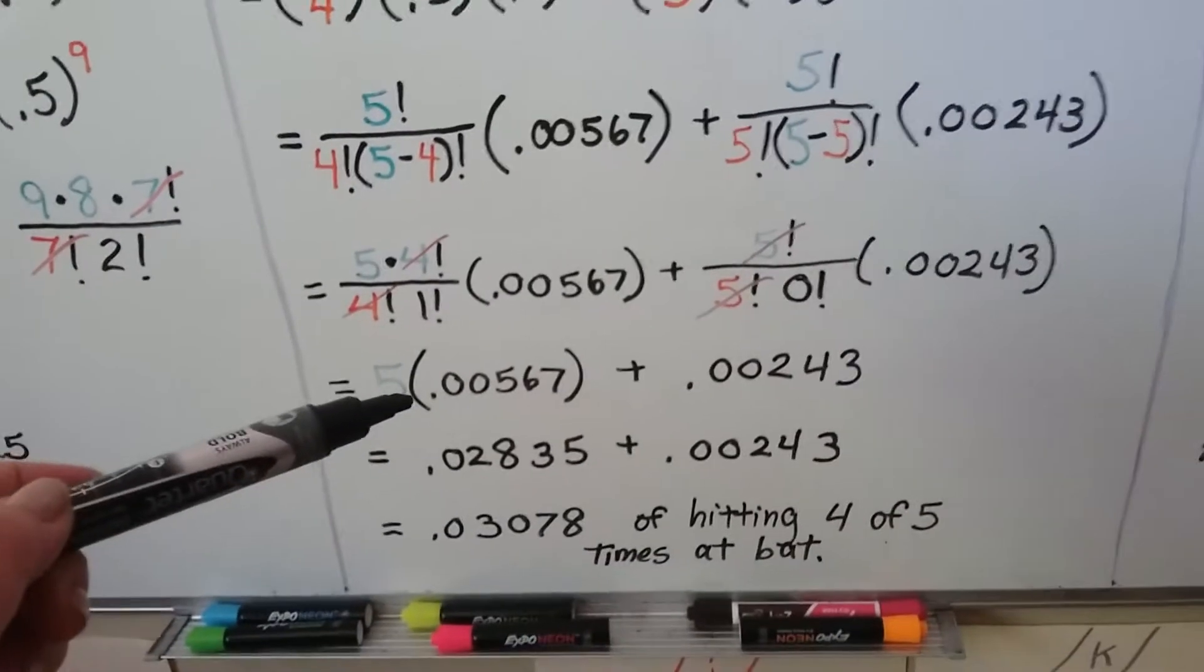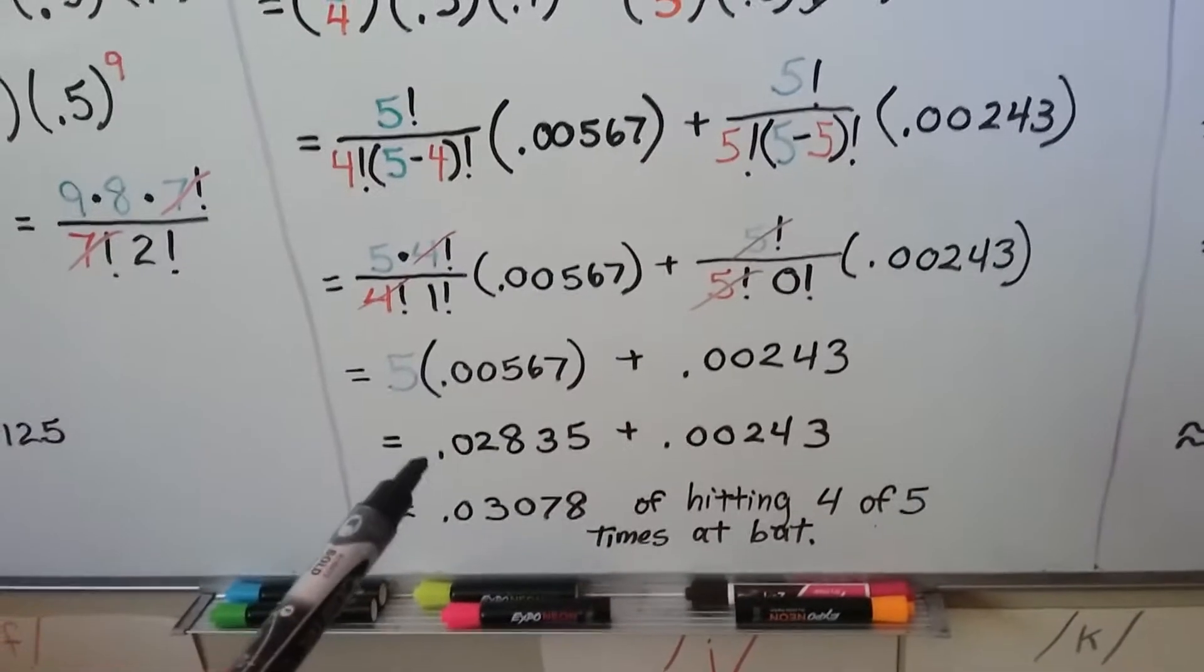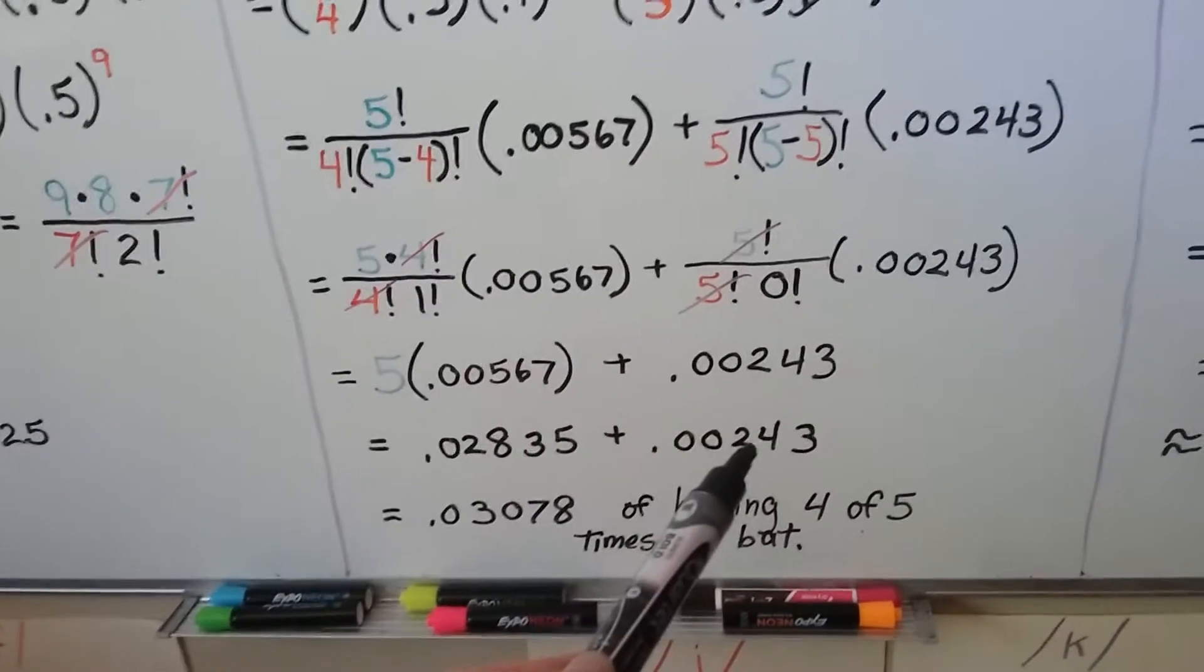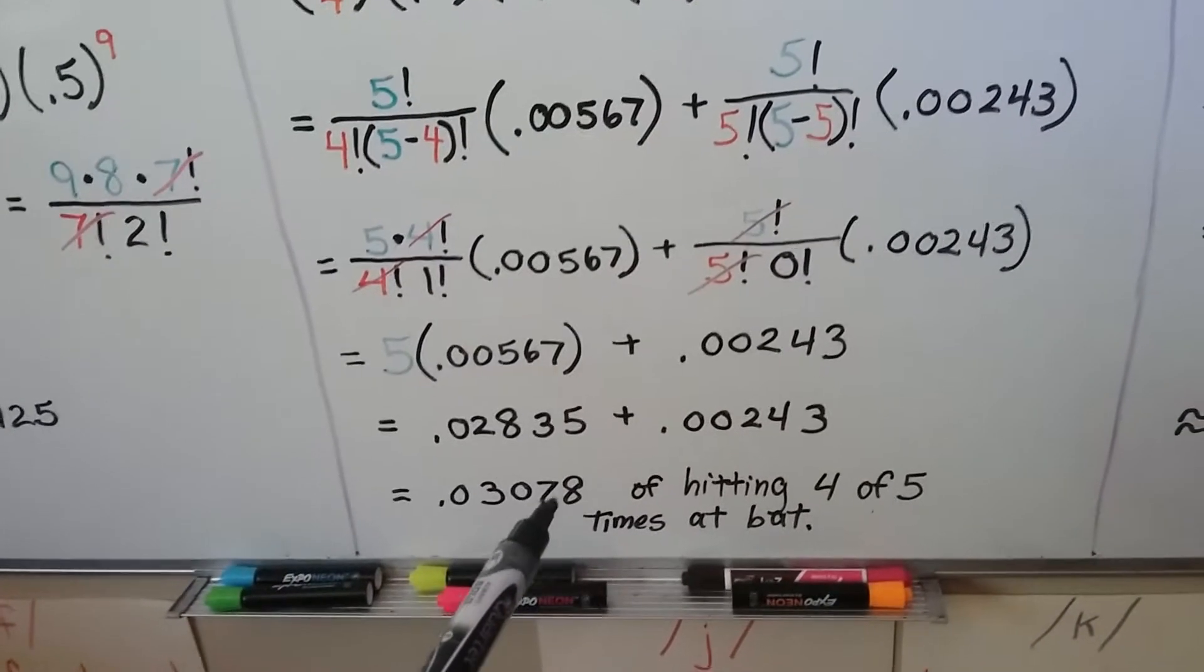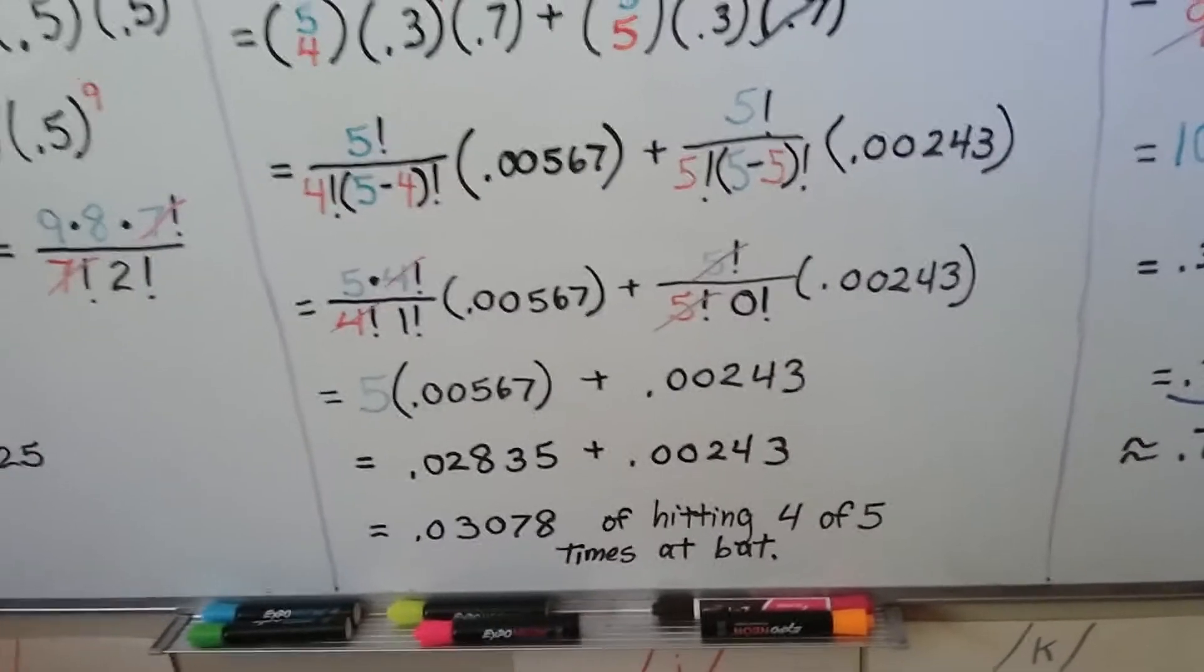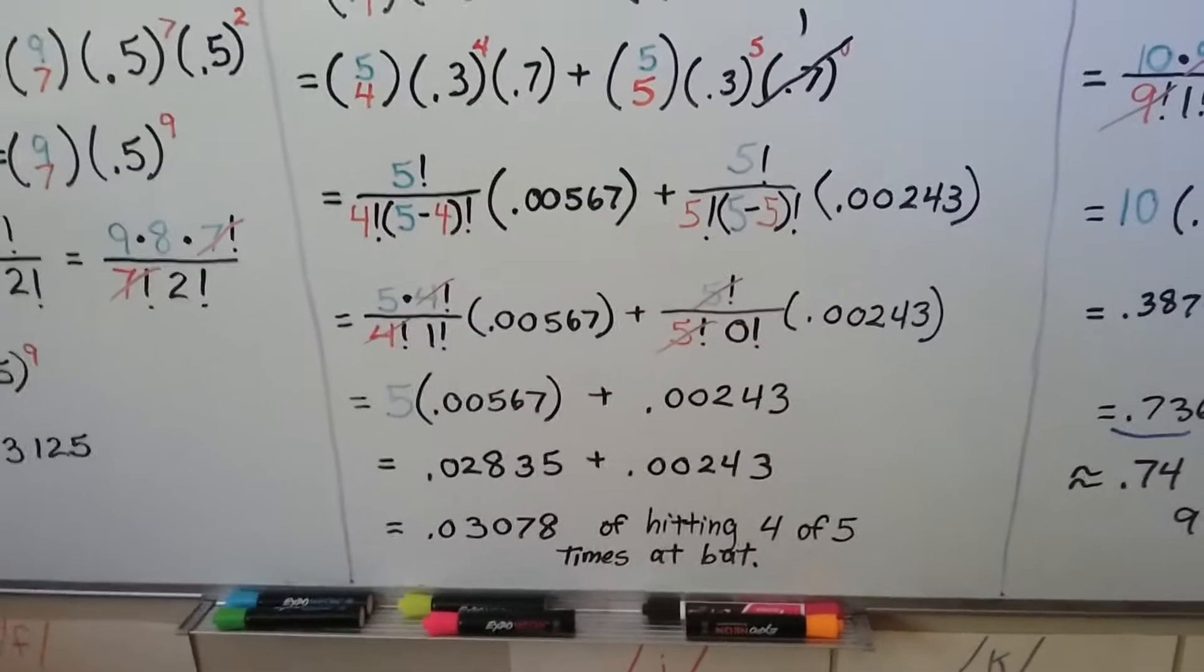We do five times 0.00567 and get 0.02835. We add it to this decimal and get 0.03078 of hitting four of five times at bat.